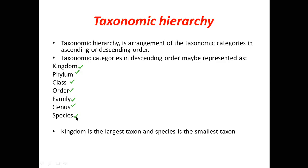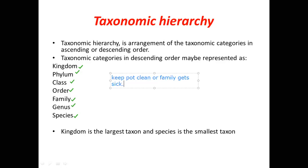Kingdom is the biggest taxon and species is the smallest. To remember the descending order — kingdom, phylum, class, order, family, genus, species — there is a useful trick: 'Keep pot clean and family gets sick.' The biggest taxon is kingdom and the smallest is species.